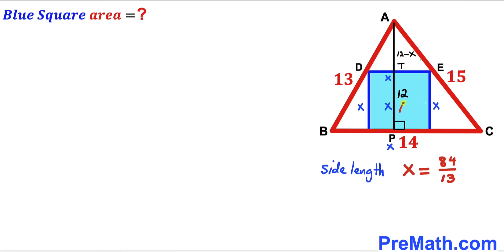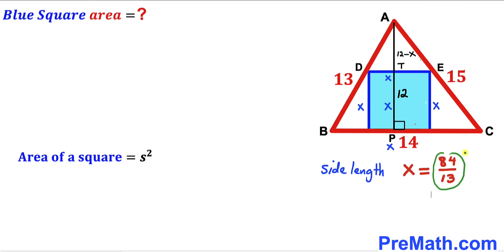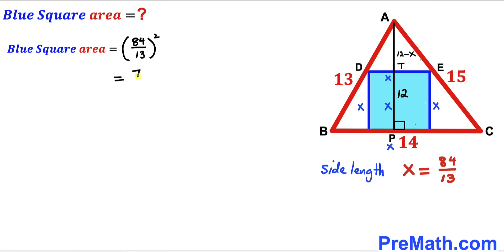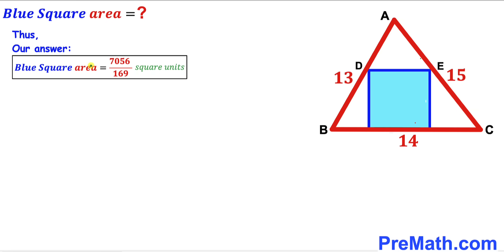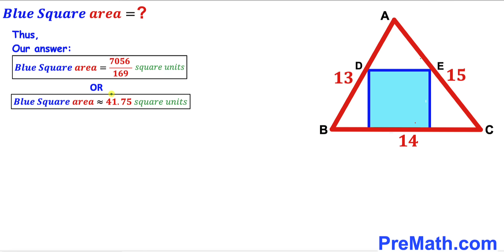Now for the final step: we calculate the area of the blue shaded square. The area formula is Area = s², where s is the side length. Our side length is 84/13, so the area = (84/13)² = 7056/169 square units. Thus the area of the blue square is 7056/169 square units, which is approximately 41.75 square units. Thanks for watching and please don't forget to subscribe to my channel for more exciting videos!